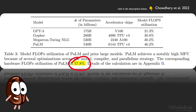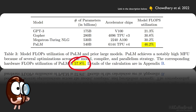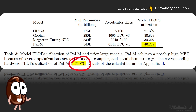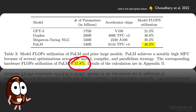Hardware FLOPs utilization basically measures the time in which the hardware is not idle or waiting for something, but really computing something interesting. In this table comparing PaLM to previous large language models, you can see a FLOPs utilization of 46.2%, so smaller than 57.8% in the caption. This is because in the table you can find the FLOPs utilization without rematerialization. Rematerialization means that one saves memory by not storing some intermediate activations, but by recomputing them when needed. So for comparability, the number in the table is shown without rematerialization — but it is a lot higher than for the comparably inefficient GPT-3 model.